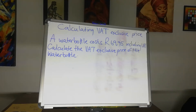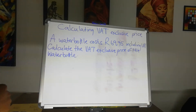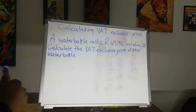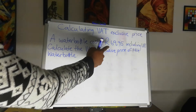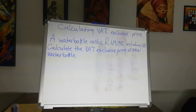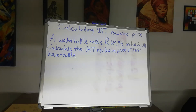Let's calculate the VAT exclusive price. A water bottle costs $69.95, including VAT. Therefore, in the $69.95 there is VAT. Now, calculate the VAT exclusive price of the bottle.